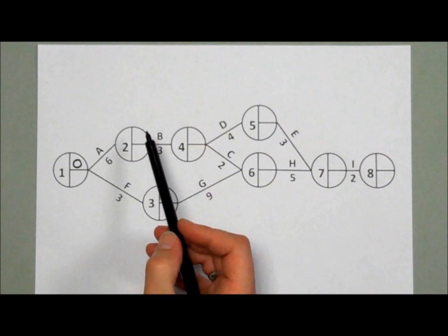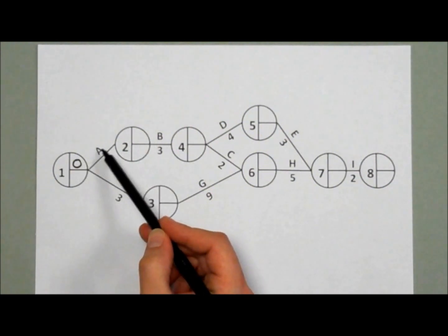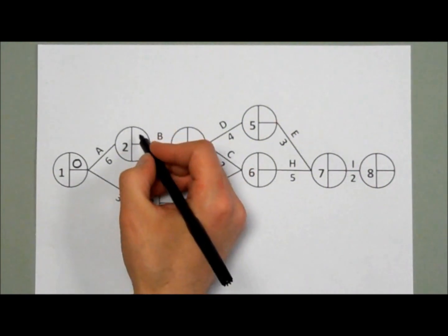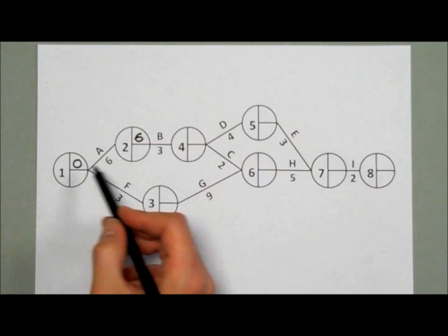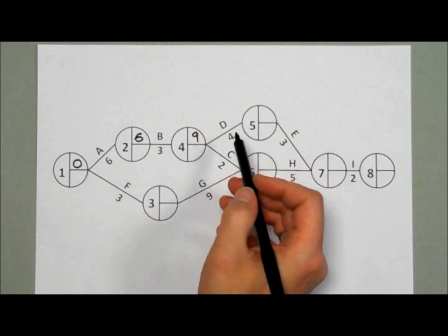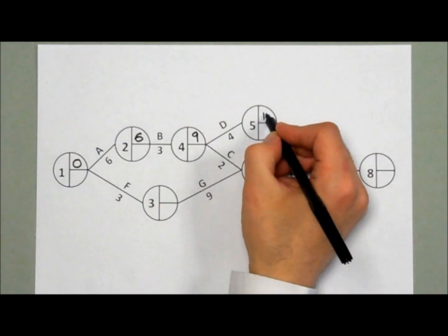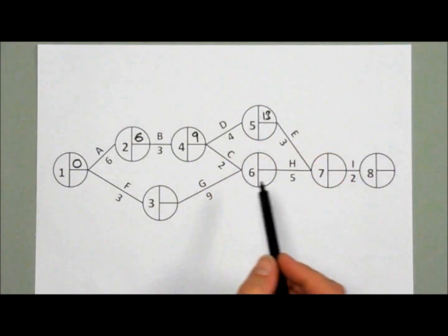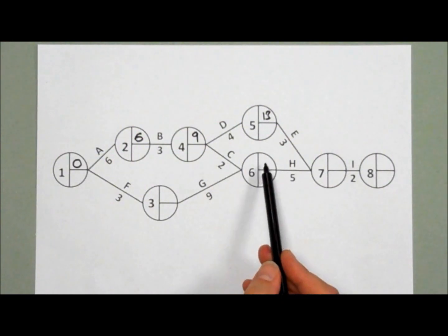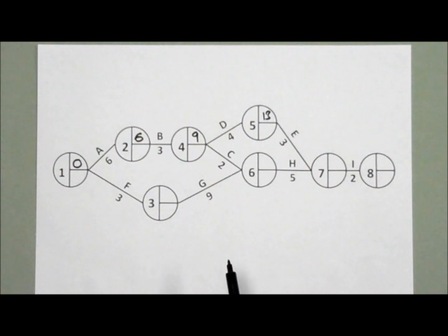To work out the early start time of activity B - so after A is finished - we take the early start time of A plus its duration, and we need that period to pass before we can start B. So 0 plus 6 is 6, and 6 plus 3 is 9, so at this point we can start D and C. 9 plus 4 is 13. However, we need to pause here - we've got two activities coming together, we have to wait for both of them to finish. So before we can calculate the early start time of H, we need to go back and look on the lower path.